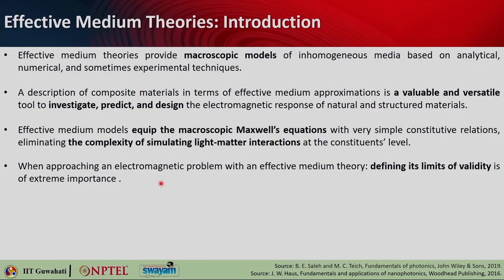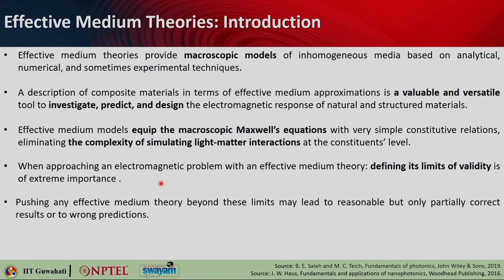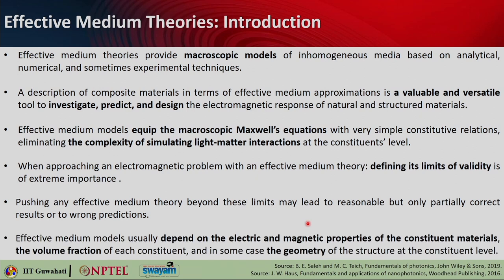When approaching an electromagnetic problem with effective medium theory, it is very important to know the limits in which this theory is valid — those bounds are called Wiener bounds, which we will see in the next slide. If you push the effective medium theory beyond these limits, it will obviously fail and you will get wrong predictions. Effective medium theory depends on the electric and magnetic properties of the constituent materials, the volume fraction of each constituent, and in some cases the geometry of the structure at the constituent level.